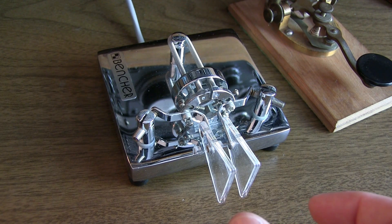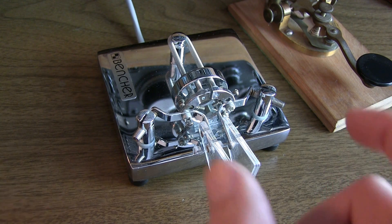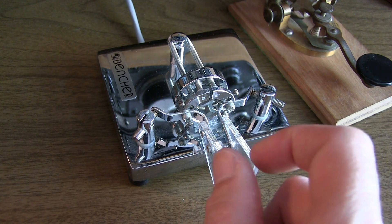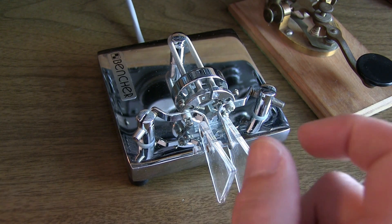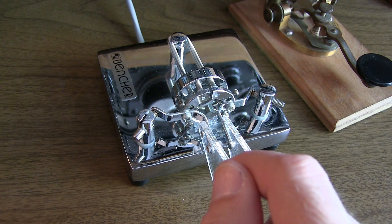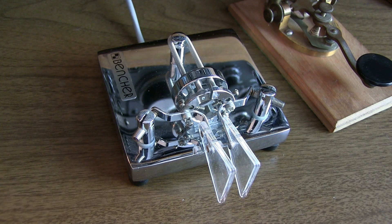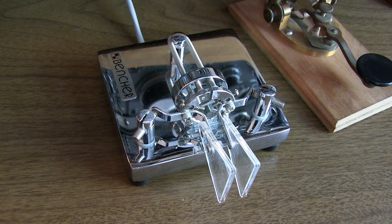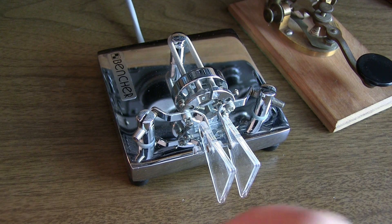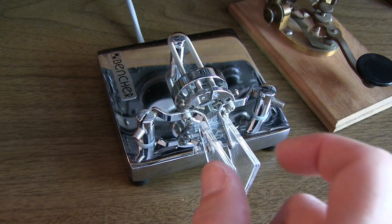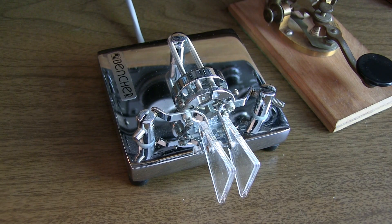Now there is an iambic mode B, not quite as common, but what B would do is when you're squeezing the paddles, when you let go of the paddles, it inserts one more of the opposite element just as it completes. But to me, I find the mode A the most natural because I'm only going to send the characters that I'm actually depressing the keys for.